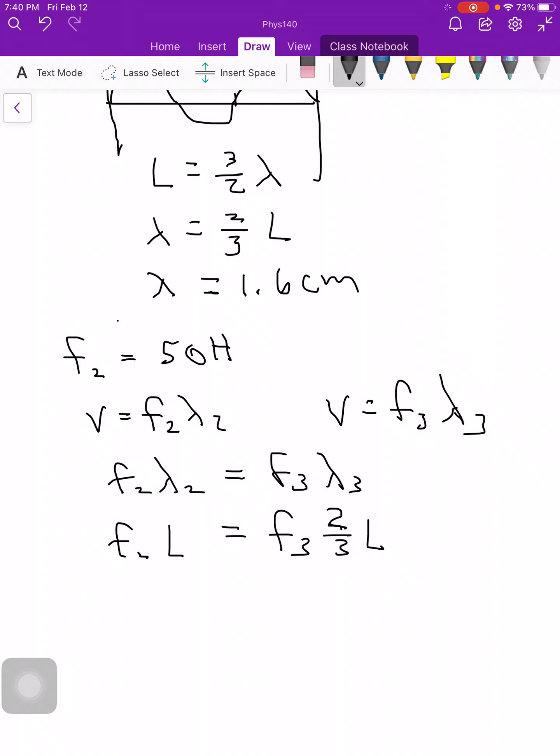So now I can cancel out my L's on both sides, and now I see that f3 is equal to 3 halves times f2. And so therefore then f3 is equal to 3 halves of 50.